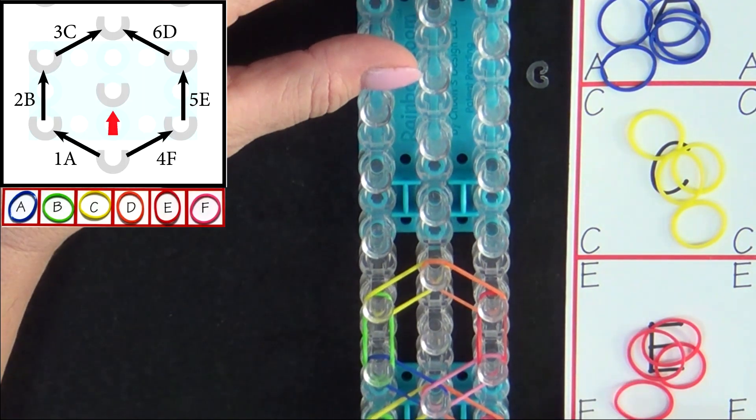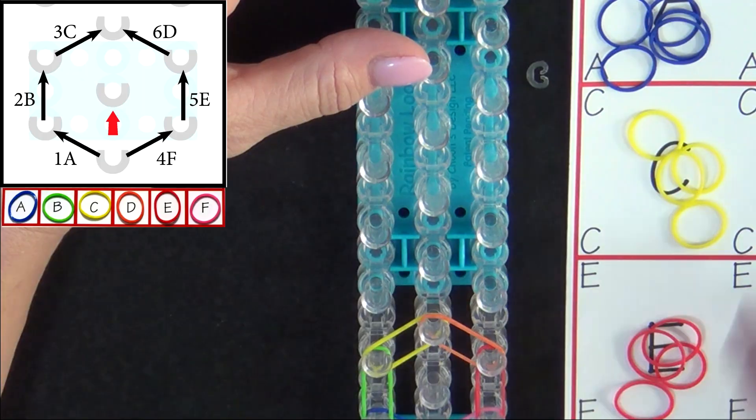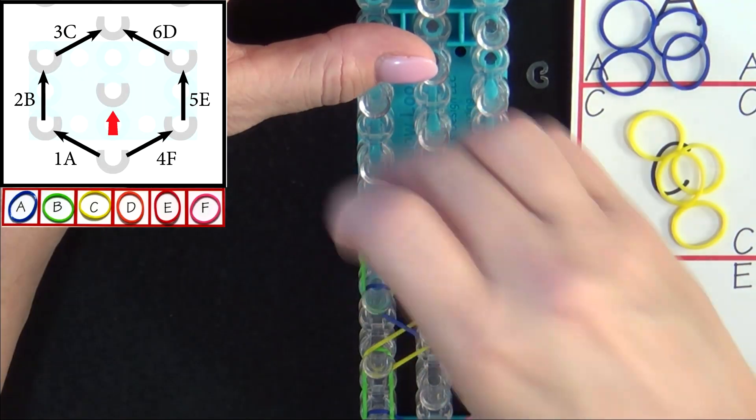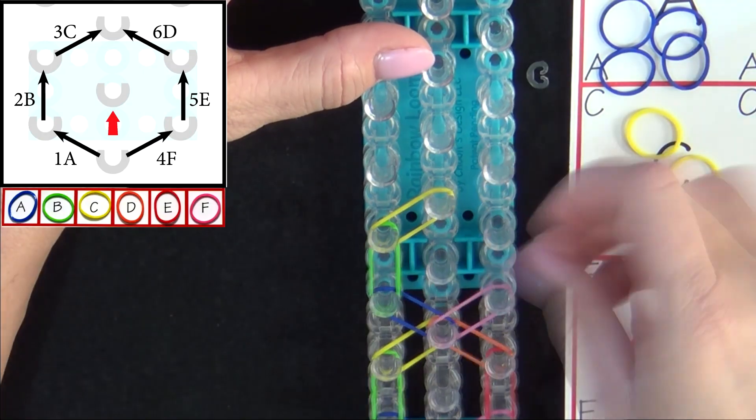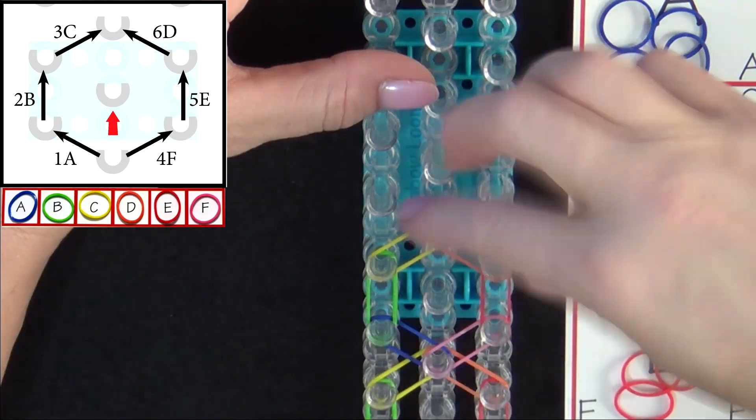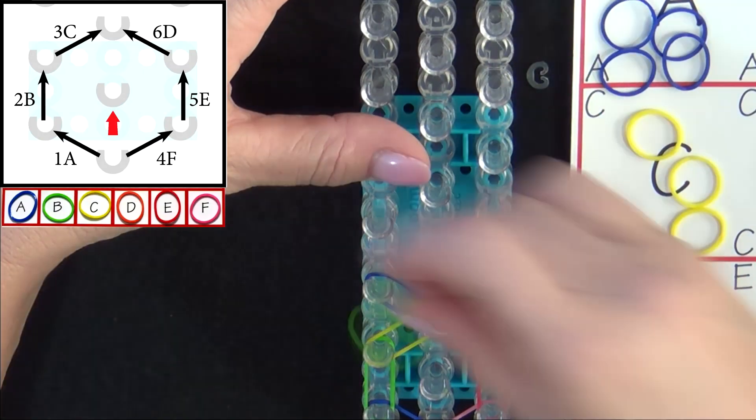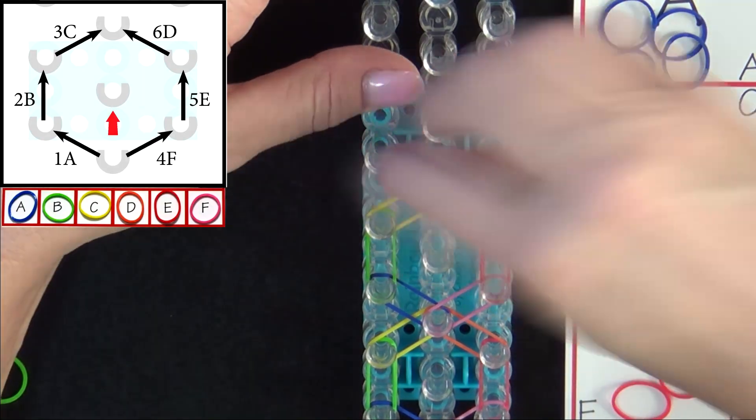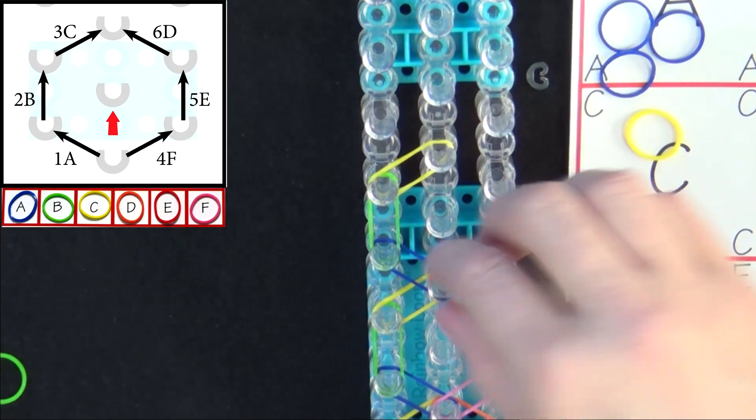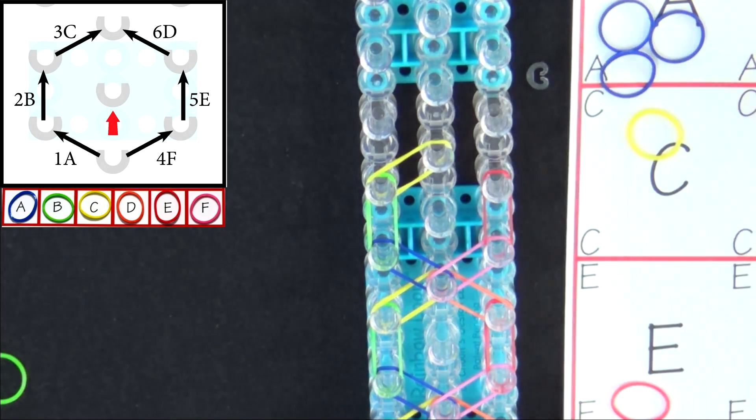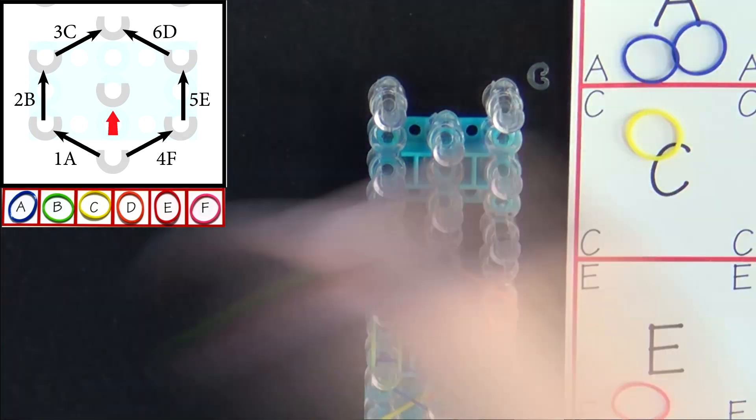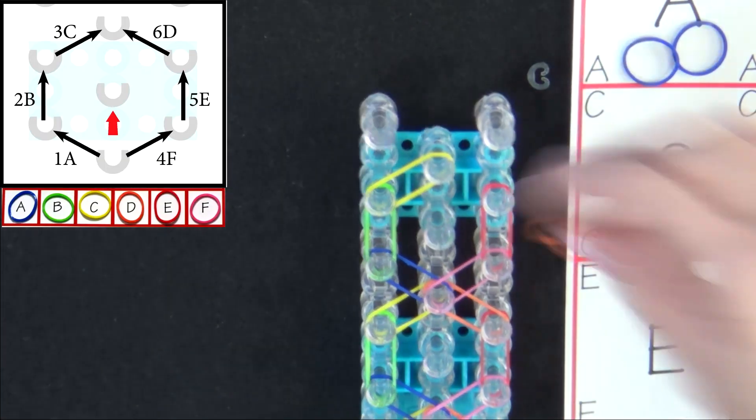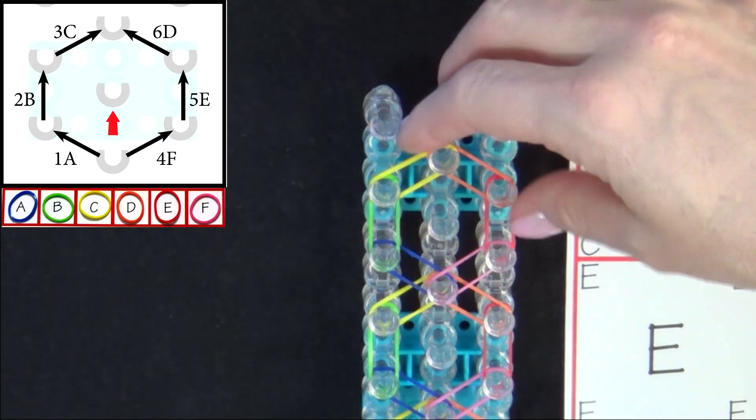Pause the video here and refer to the diagram on your screen until you reach the end of the loom. We'll fast forward from here. And you place your last band into the center pin.